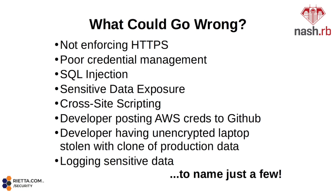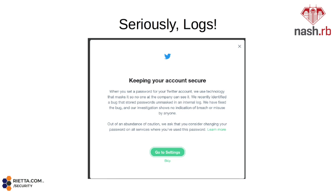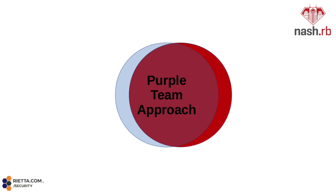Sensitive data exposure happens all the time, especially backups — maybe not secured as well as the production systems. Developers' laptops can be stolen and inadvertently logging sensitive data. This happens — thanks, Twitter. Seriously, today I logged in and got a pop-up telling me they inadvertently logged my plain text password. It's a good thing it's a 60-character random string. What we really need is a purple team approach — if we bring the red and the blue teams closer together, more developers should know more about security and go to security conferences, and more security people should attend developer conferences.